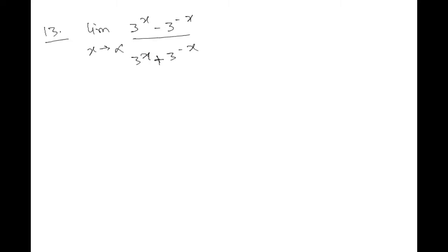Let's say that x is equal to infinity. So, 3 to infinity minus 3 to the power minus infinity. Infinity minus infinity divided by infinity plus infinity. These numbers are the form of the numbers. The data is actually infinity by infinity.